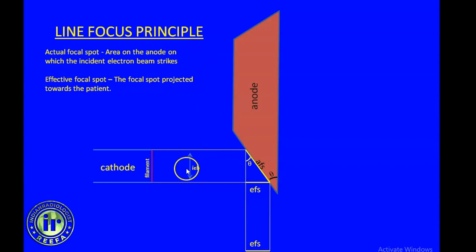The first term is the Incident Electron Beam. It is the electron beam that emanates from the filament from the cathode side and bombards the target anode. The area on the anode where this incident electron beam strikes is called the actual focal spot. The focal spot projected towards the patient side is called the effective focal spot, also called the apparent focal spot, because it appears to be of a different width than the actual focal spot, which is achieved by the angulation of the anode.